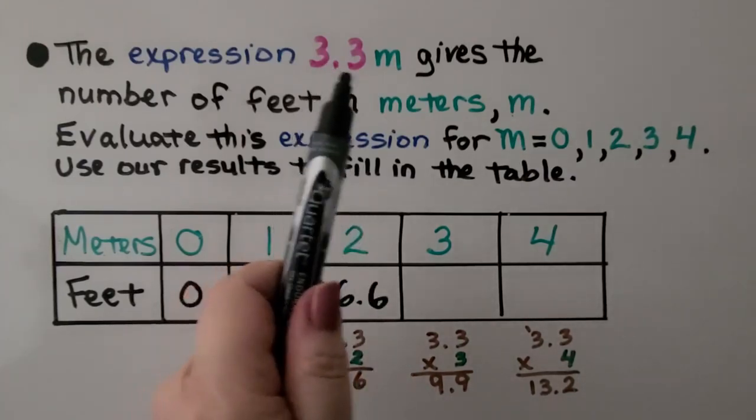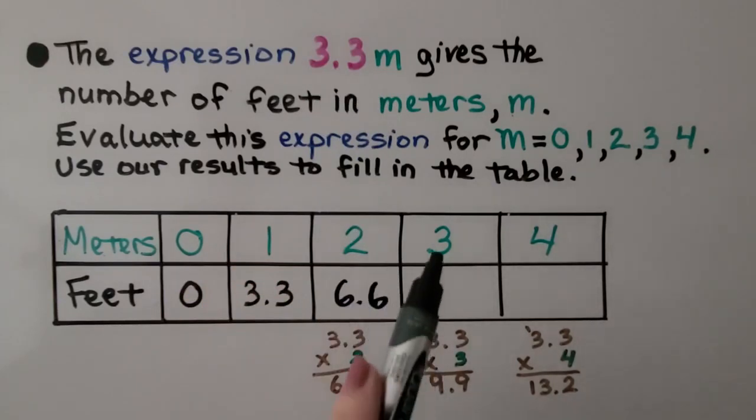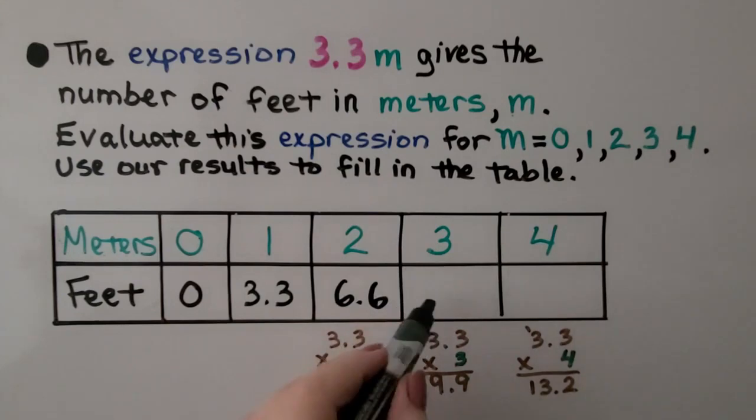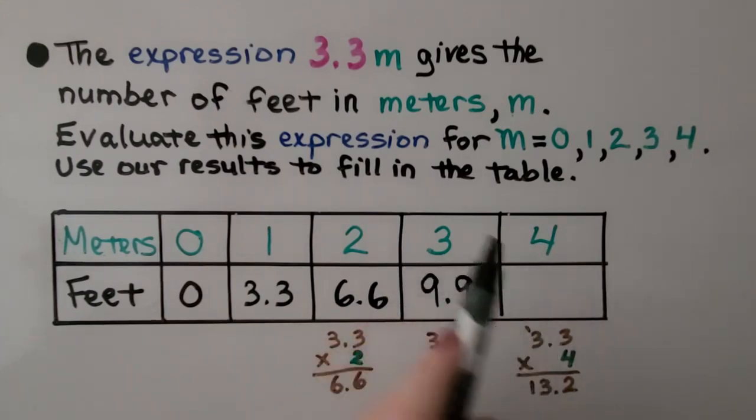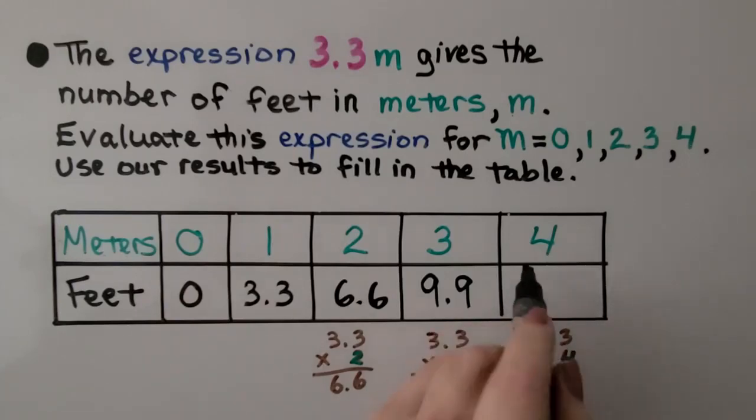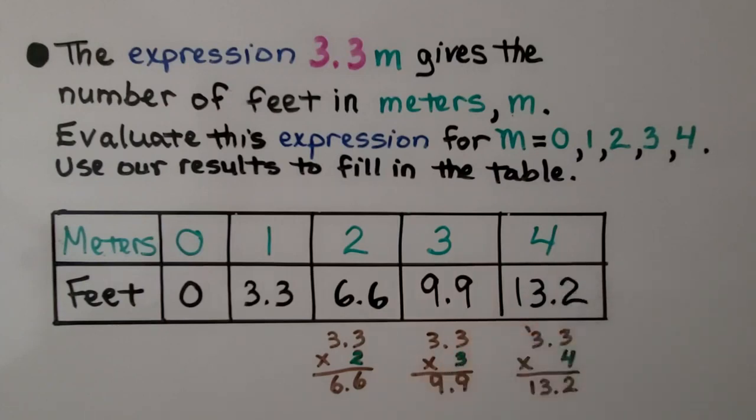If we multiply it by four, we get 13.2 feet. As we go up by one more meter, our feet go up by 3.3 more.